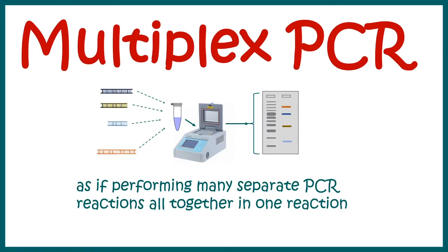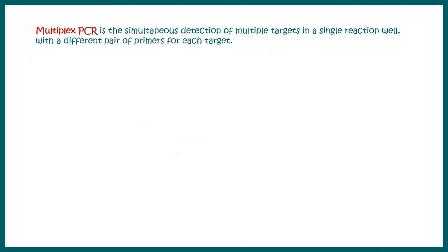The name suggests performing many separate PCR reactions all together in one reaction, right? Exactly. Multiplex PCR is the simultaneous detection of multiple targets in a single reaction with a different pair of primer sets for each target.